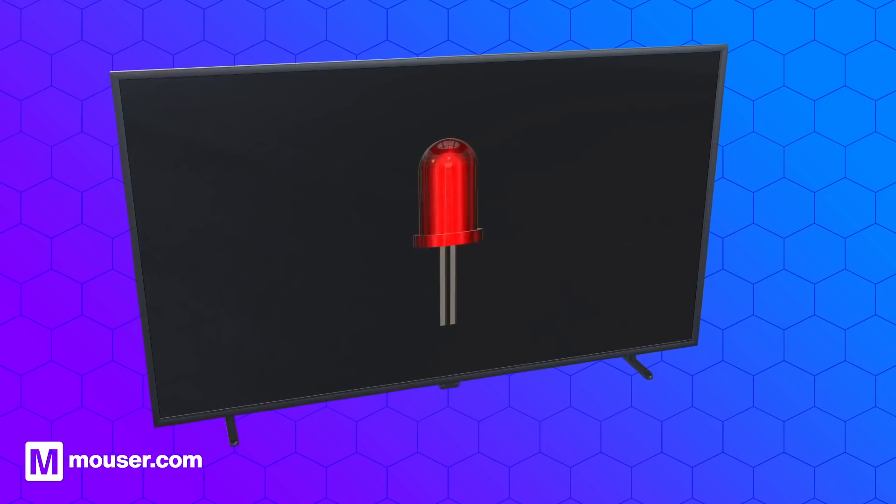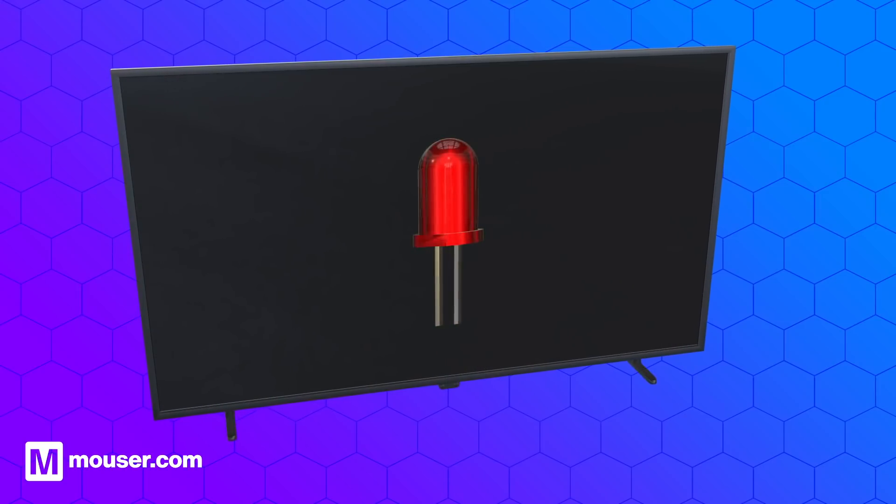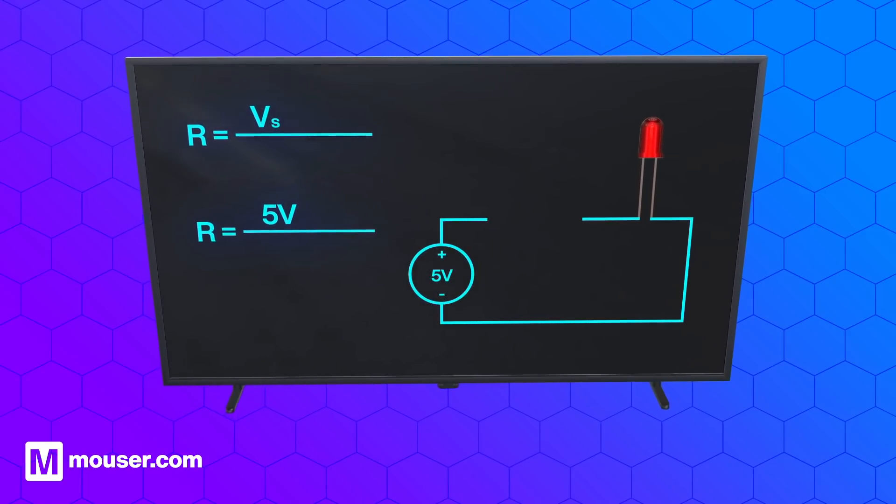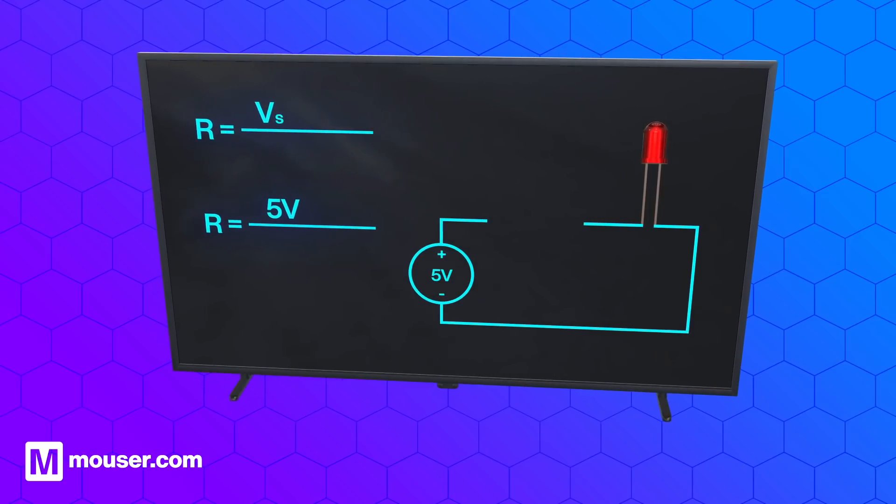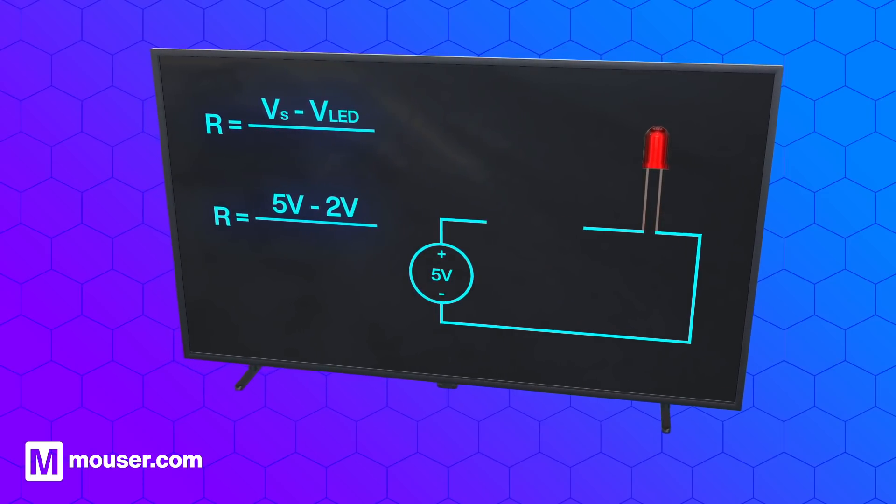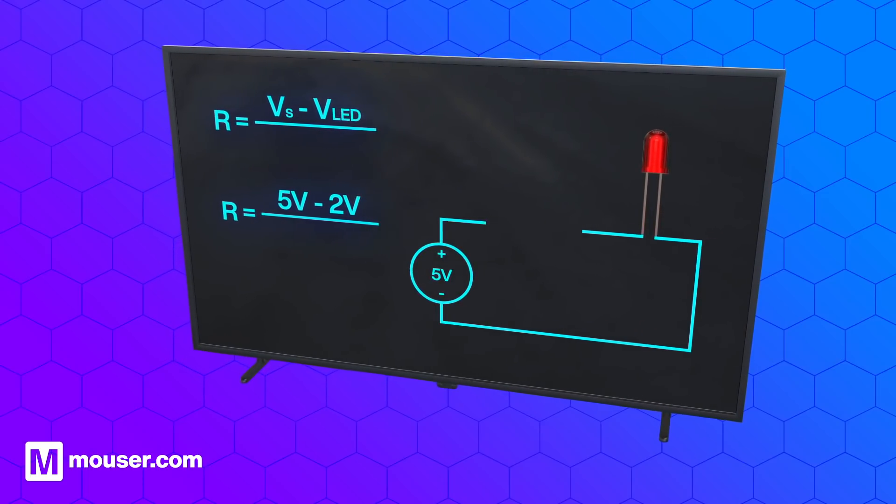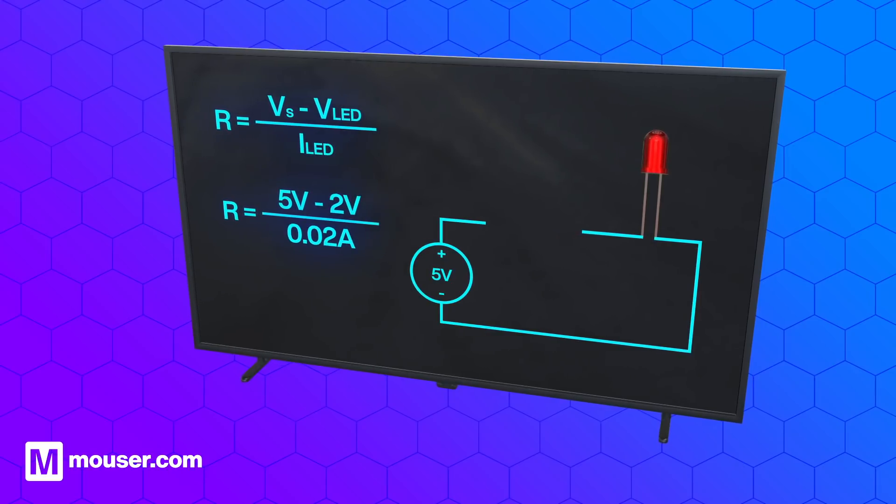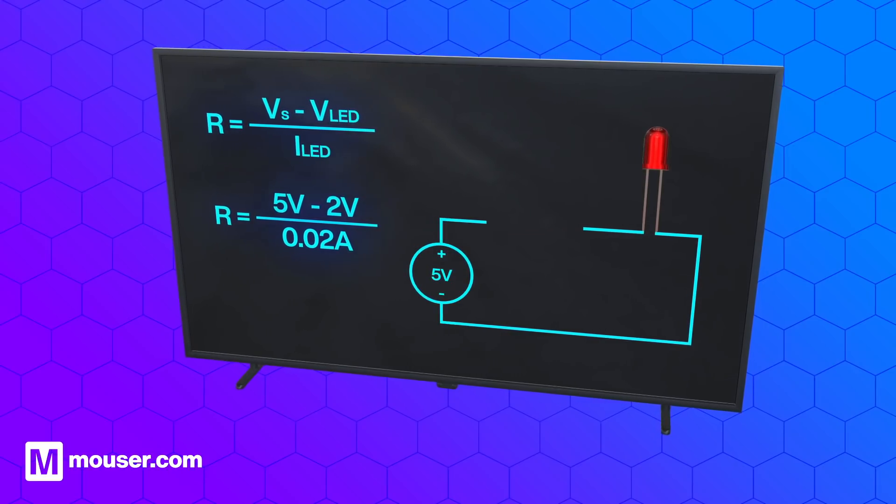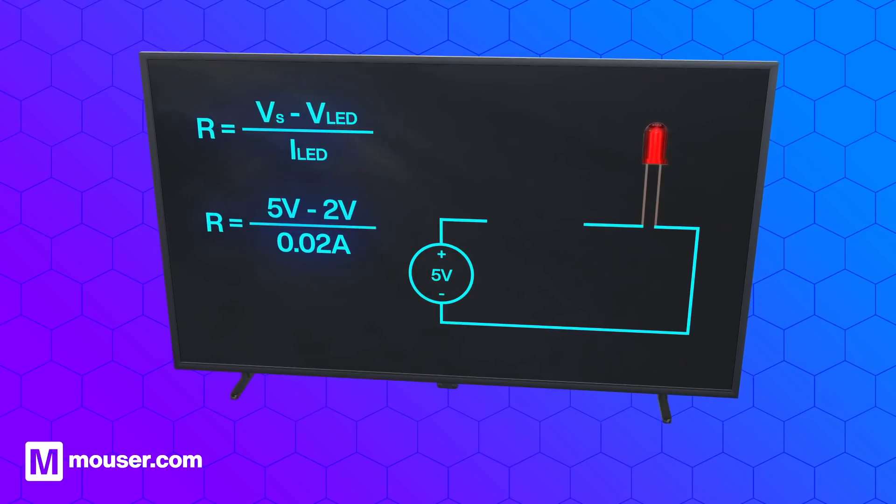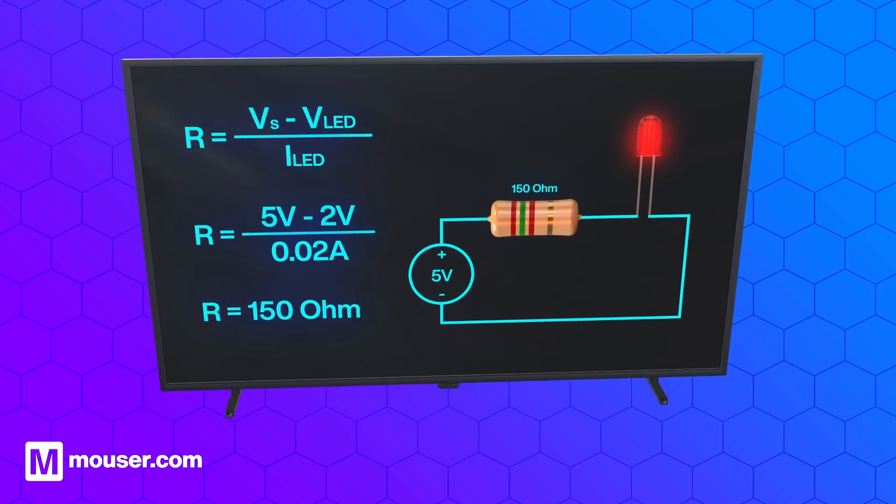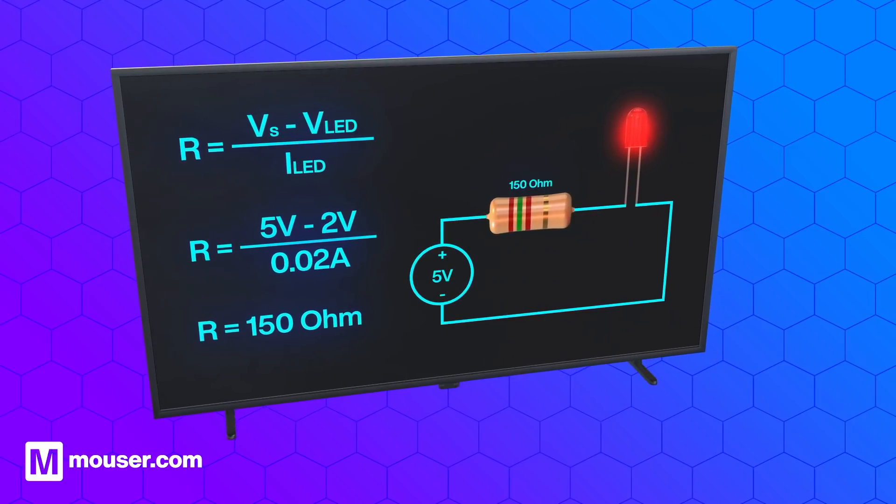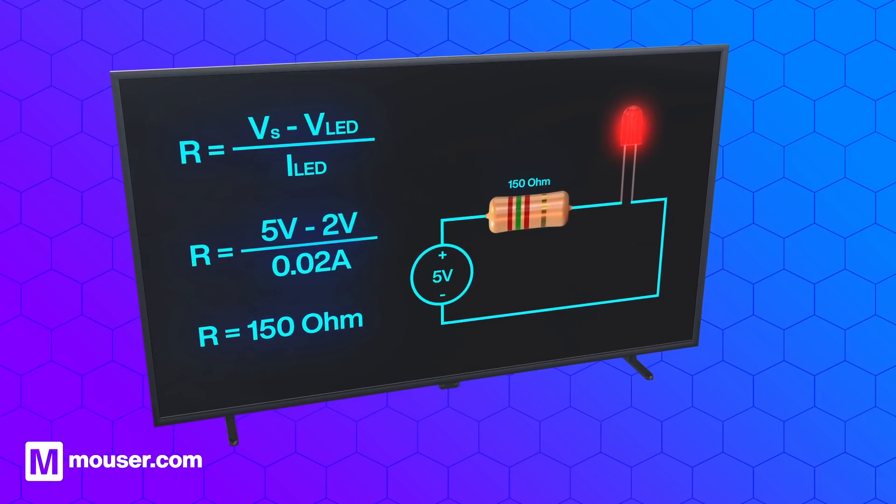Let's take a real world example of illuminating an LED. If the supply voltage is 5 volts and the voltage drop across the LED due to impedance is 2 volts, current flows as a result of the remaining 3 volts. And if the average current consumption of the LED is 20 milliamps, the required resistor can be calculated by transposing Ohm's law. Thus, R equals 150 ohms. This is the minimum resistor value needed to ensure the LED is illuminated without causing any damage.